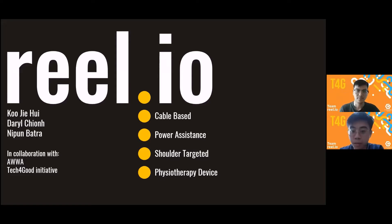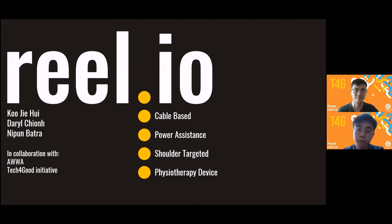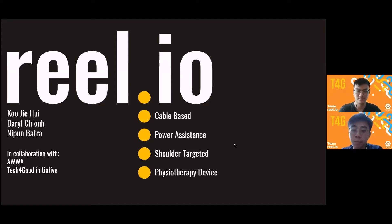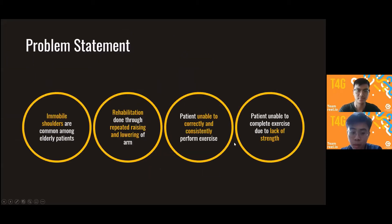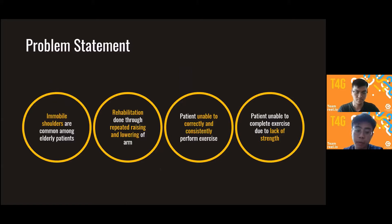Good afternoon all. I am Darryl, and I am Tsui Hui. Together we are proud to present our project which we've worked on for the past 10 weeks: Real IO. Let's begin with our problem statement. Immobile shoulders are a common issue faced by elderly patients, and rehabilitation is thus required for them to improve their condition.